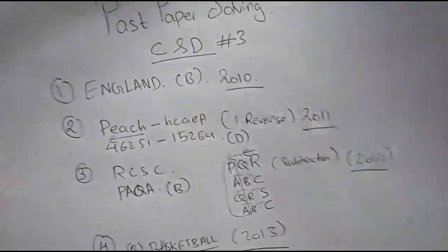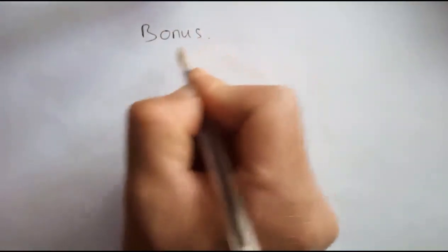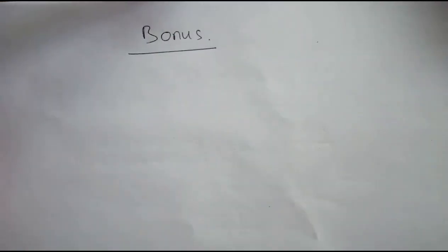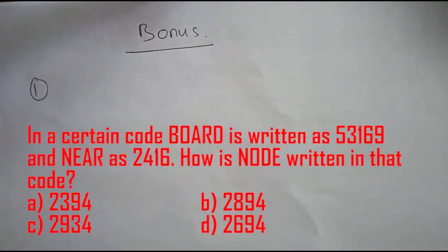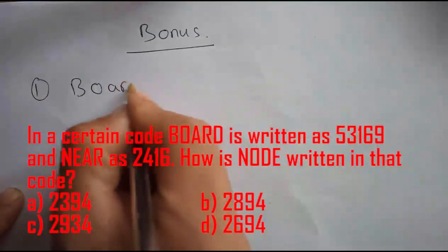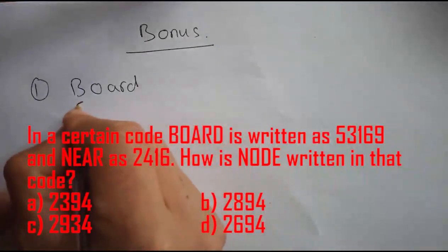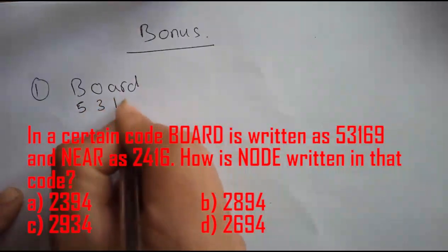Now we'll move on with the bonus questions. The first bonus question: In a certain code, BOARD is written as five-three-one-six-nine, and NEAR is coded as two-four-one-six.